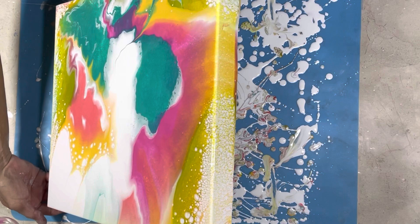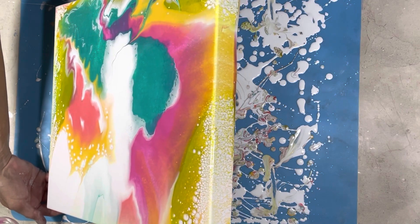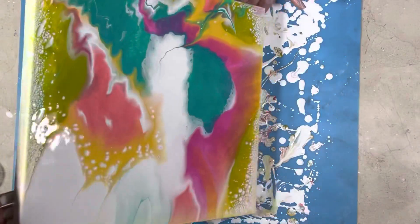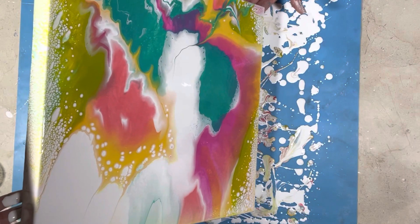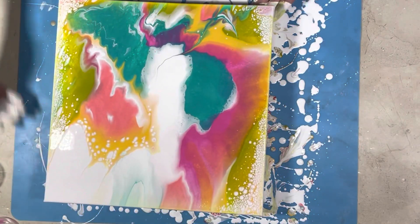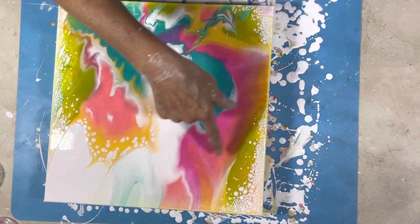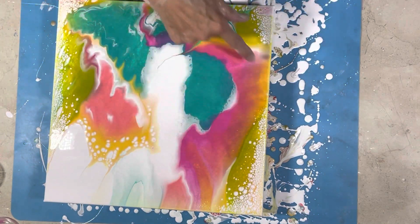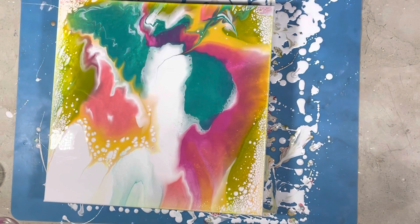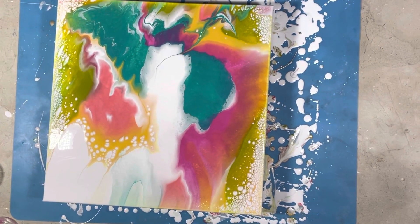Those Boom Gels really react well with the Behr paint. I find they react better with the Behr than they do with the DecoArt Satin Enamels. Look at the cells starting up already. This is a Dwight trick I saw on one of his videos. Move the paint back and forth to create more cells. That is going to be pretty. I'm putting you on time lapse, back in a flash.